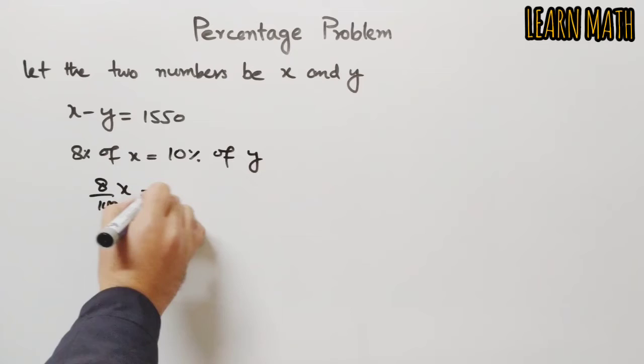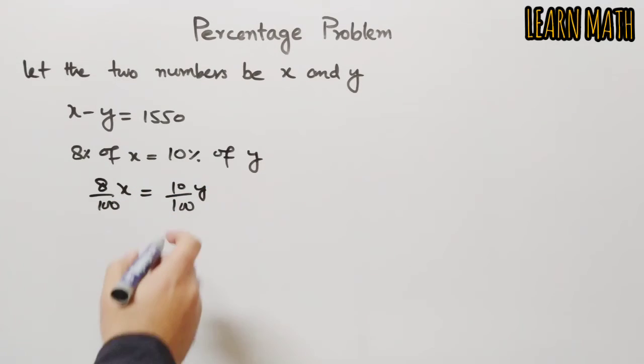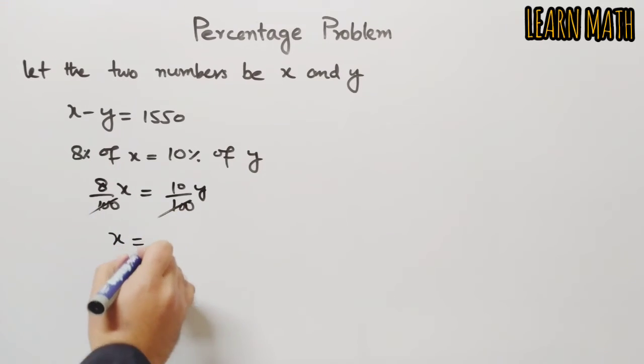8 by 100 x is equal to 10 by 100 y. Now we can cancel 100 and divide both sides by 8, so we will get x is equal to 5 by 4 y.